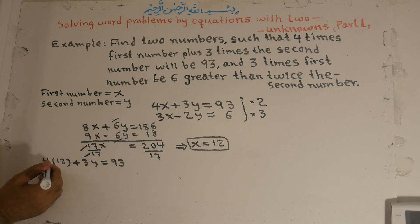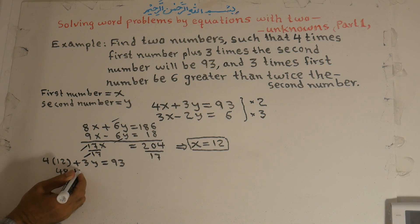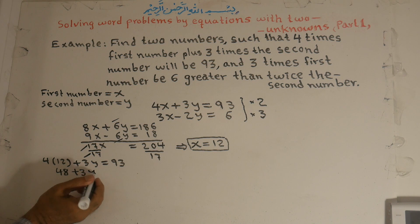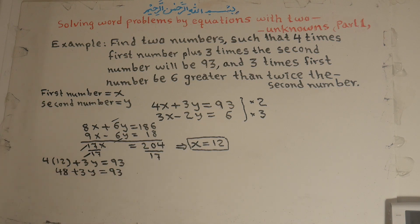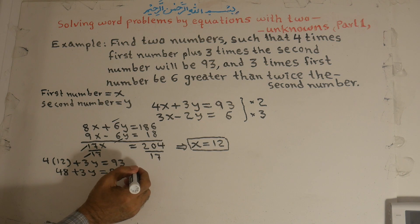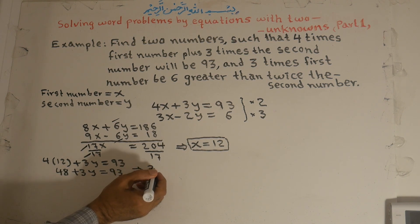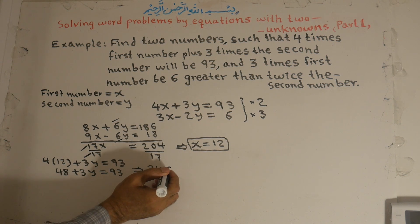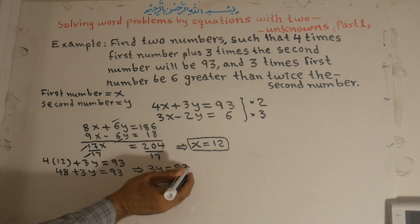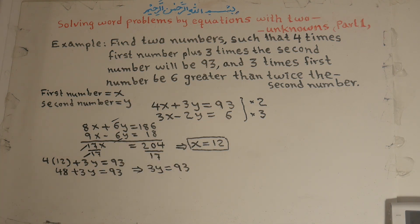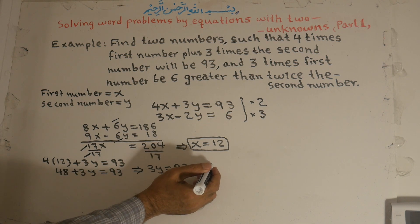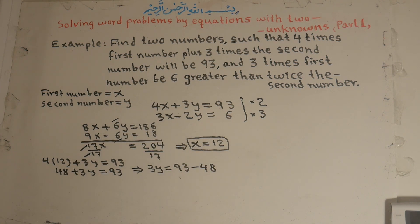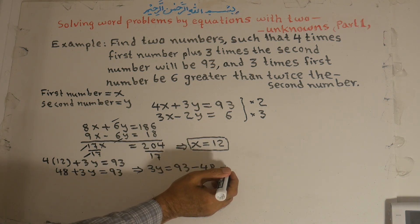Four times twelve is forty-eight, so: 48 plus 3y is equal to 93. Now we isolate 3y. We carry the 48 from the left side to the right side — since it is positive, it becomes negative: 3y equals 93 minus 48, which equals 45.